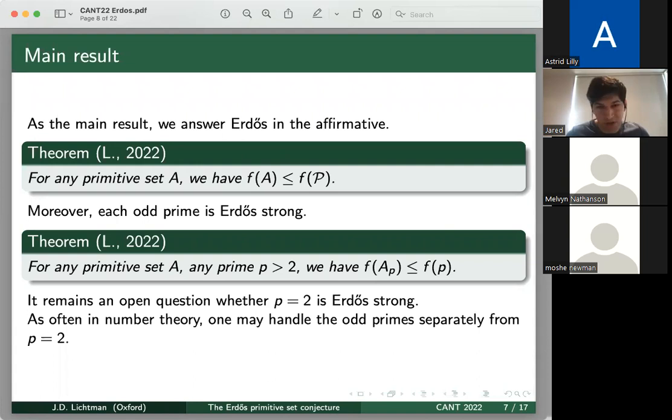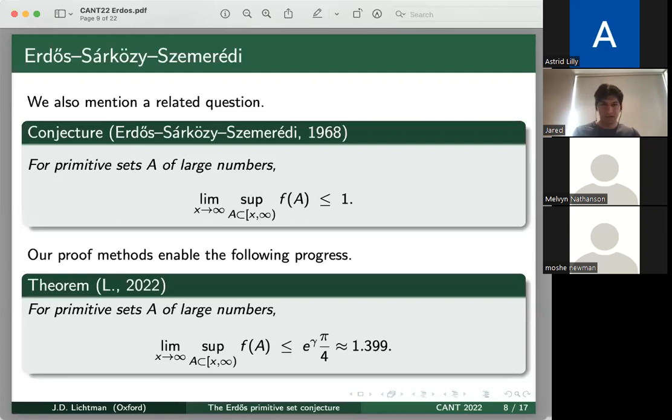And as often happens in number theory, one may handle the odd primes separately from P equals 2, and P equals 2 can be kind of more stubborn and difficult to handle. Some people often say that you have the odd primes and then two, which is the oddest prime of them all. And this is definitely in the same spirit. So there are a few results in connection to the methods in this proof of the result that I'd like to describe. But for time constraints, I'll limit myself to the following question.